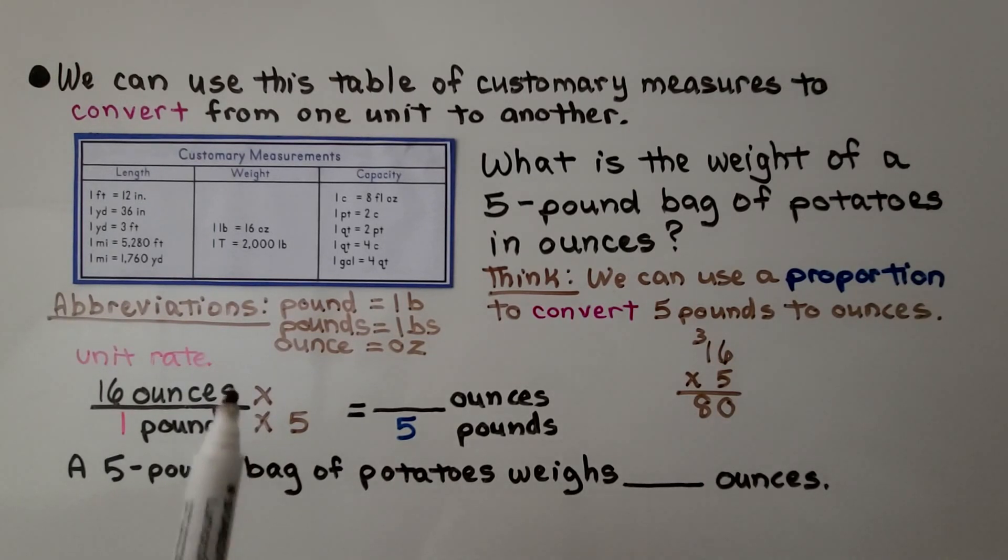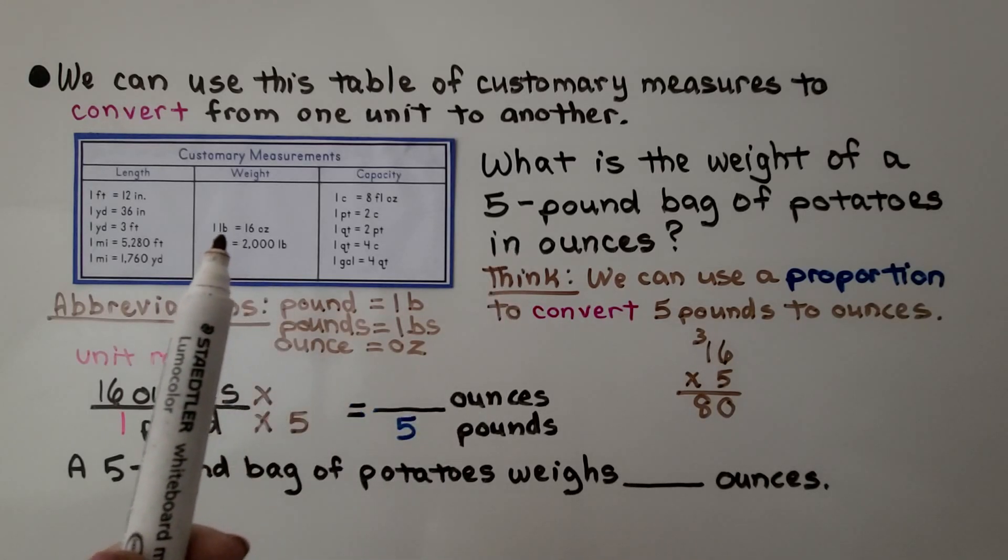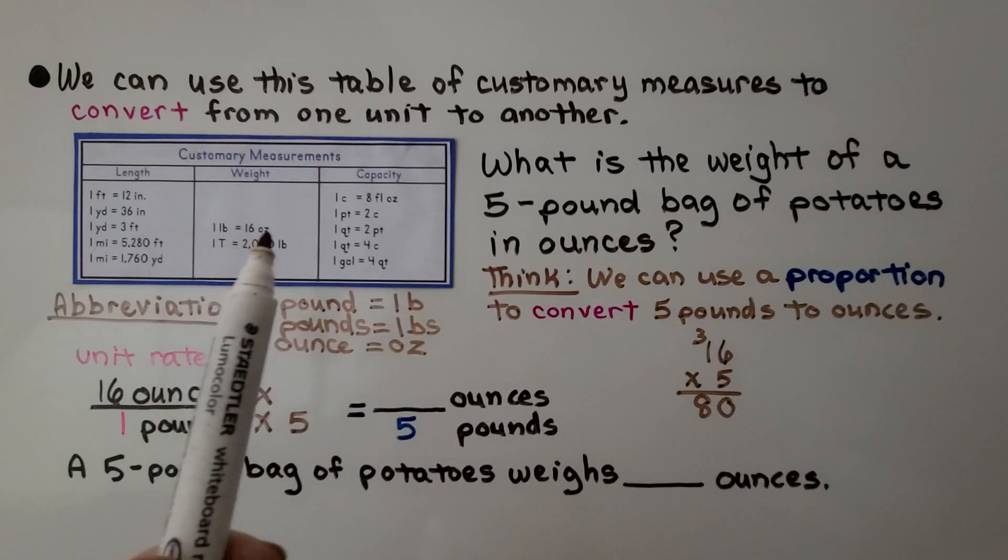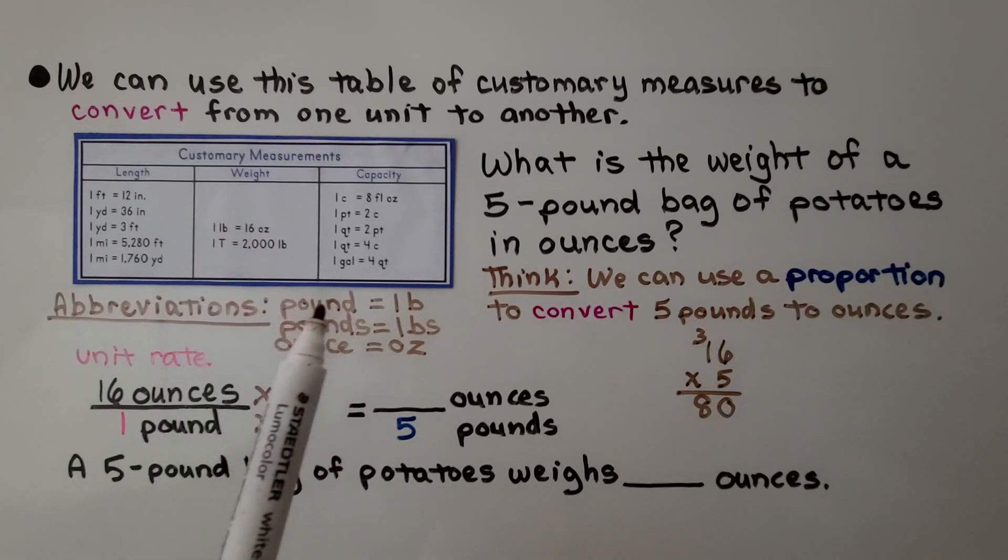We can use this table of customary measures to convert from one unit to another. What is the weight of a five-pound bag of potatoes in ounces? We look at the weight. It says there are 16 ounces in one pound. LB is the abbreviation for pound.